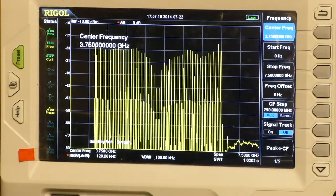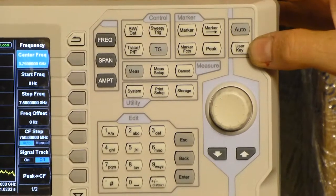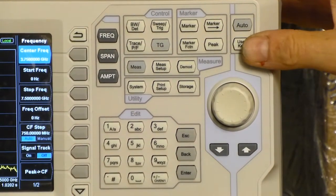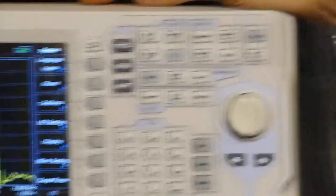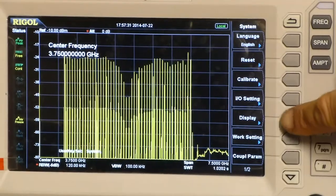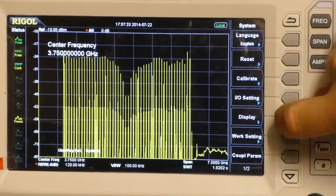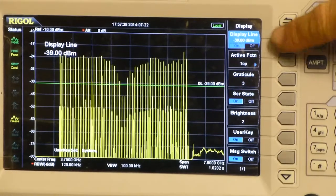What I'm going to show you today is the user key. The user key over here has a display line feature on the DSA800. So if I push the user key, you can see over here on the menus a display function. If I push that button, you can see that there is an option for me to turn on a display line.